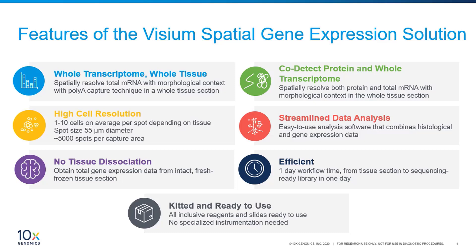Second, Visium provides high cellular resolution with a spot size of 55 microns in diameter, meaning an average of one to ten cells per spot depending on the tissue. Third, you get whole transcriptome gene expression from intact tissue, so there is no need to dissociate the tissue.